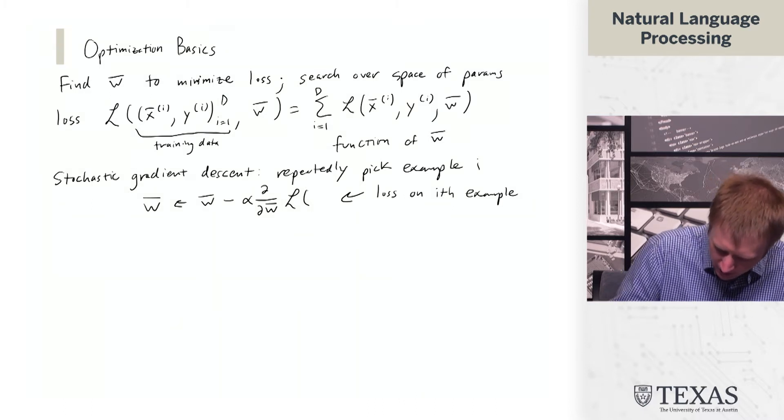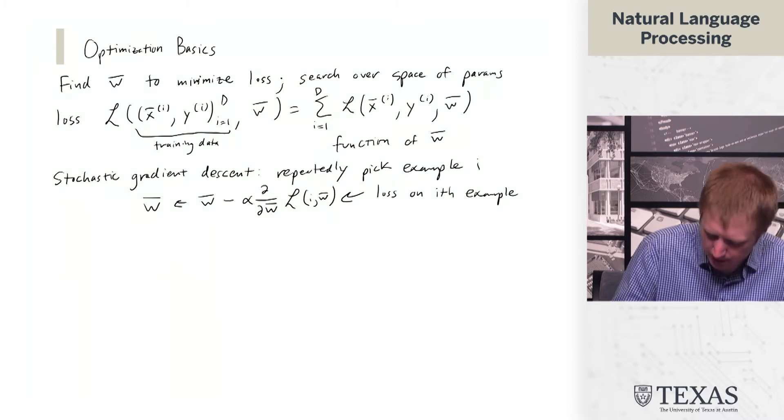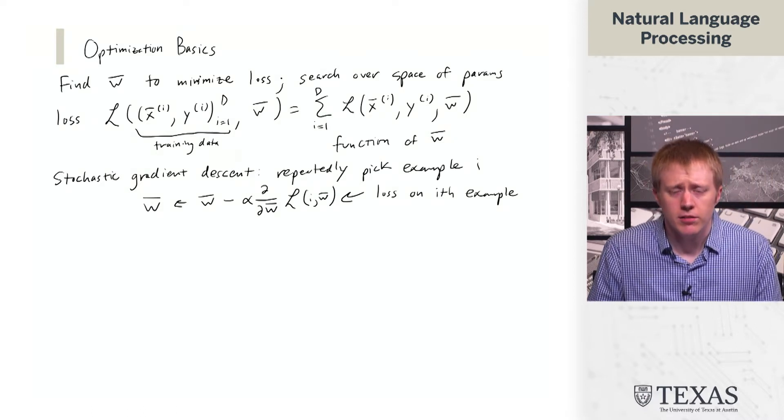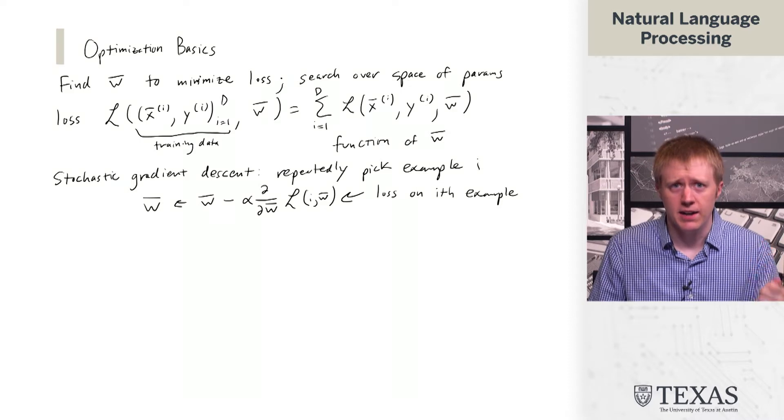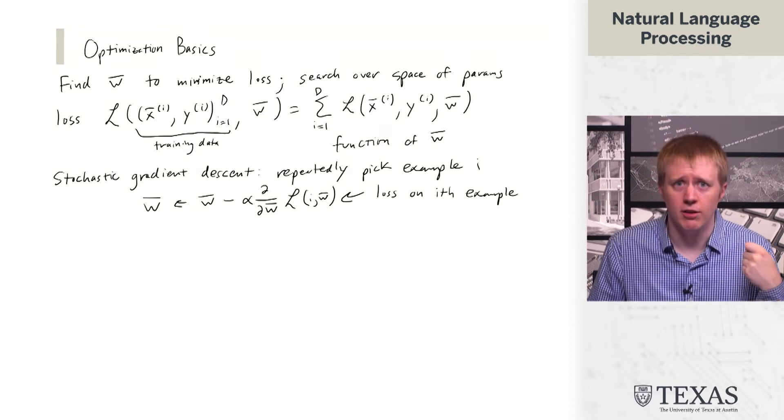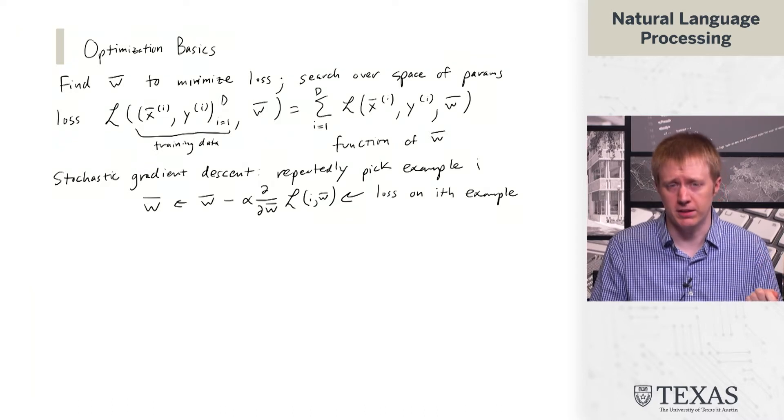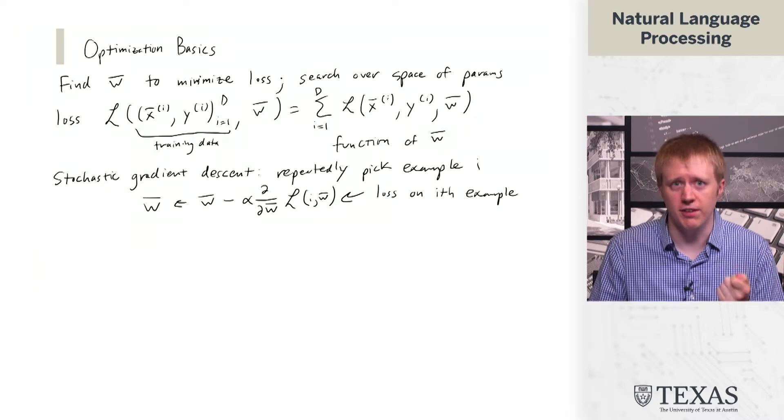I'll put in W here just to make that extra clear. We pick an example i, compute the gradient of the loss on that example with respect to the weights, and then we subtract off alpha times that.